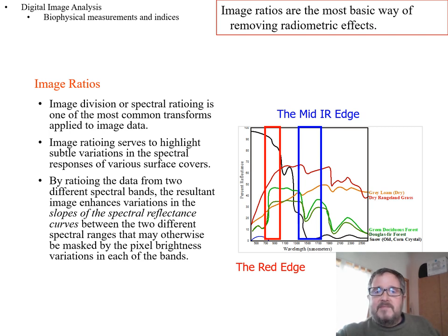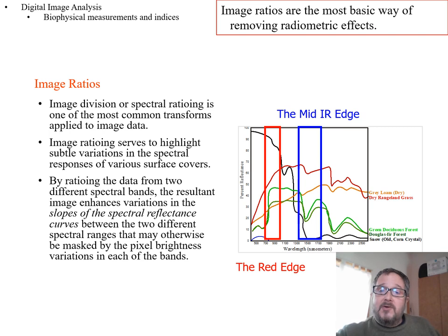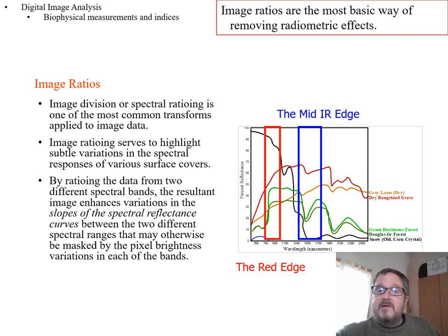Another way to think of the utility of spectral ratioing is that it enhances variations in the slopes of the spectral reflectance curve. For instance, if we look at the red edge and look at the ratio of the gray loam — that orange line — the ratio of its near-infrared value to its red value is going to be a small value above one because it's only slightly higher in the infrared. If we look at vegetation, on the other hand, near-infrared versus red gives a much higher ratio because there's a much steeper slope between red and near-infrared for vegetation than for soil.